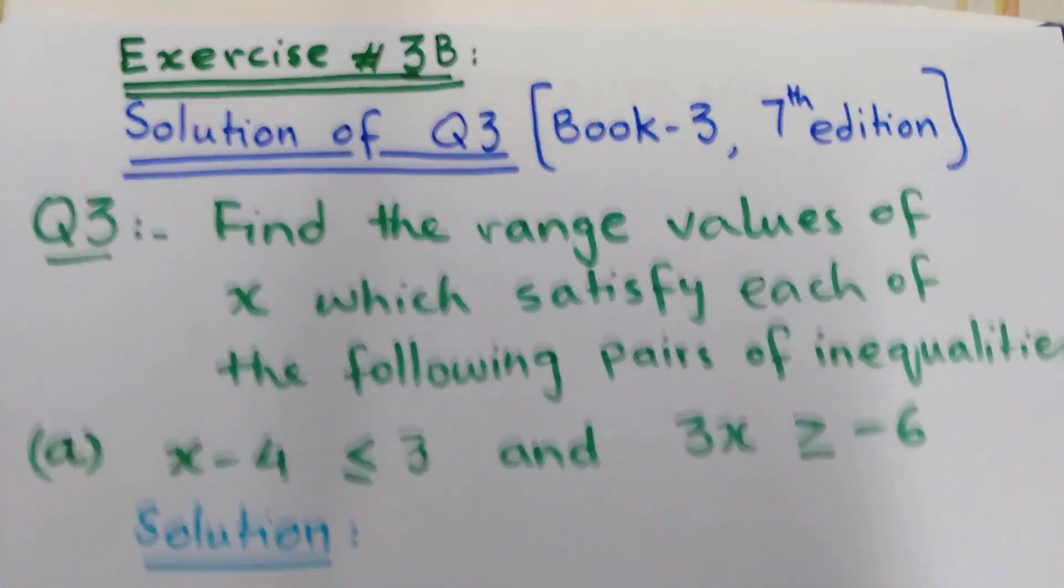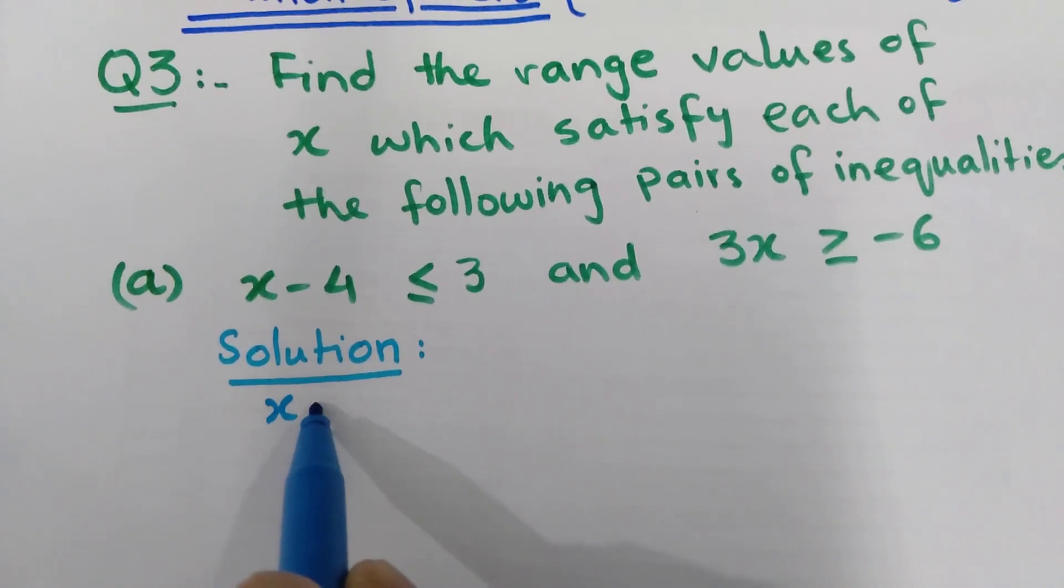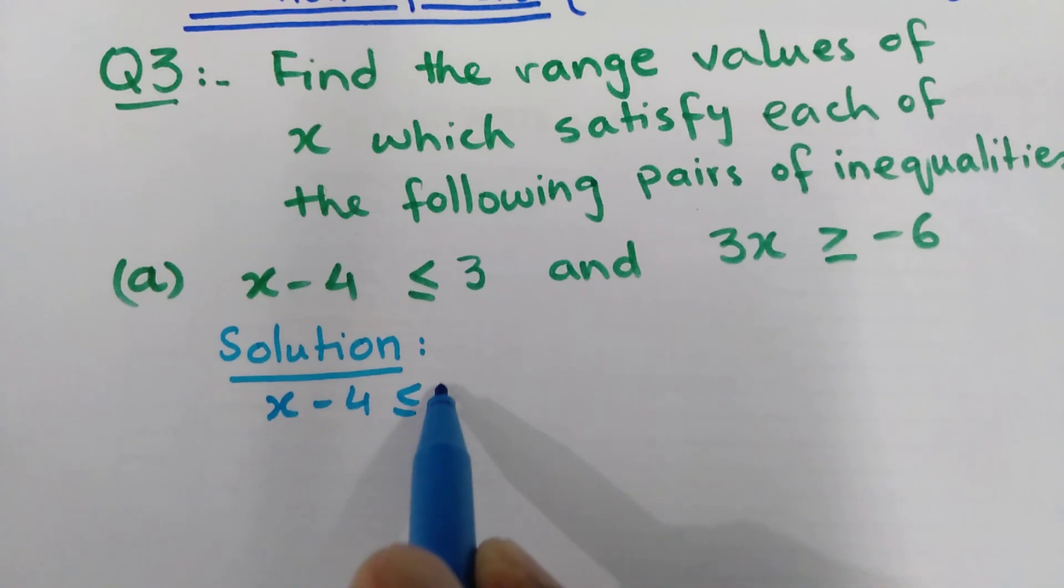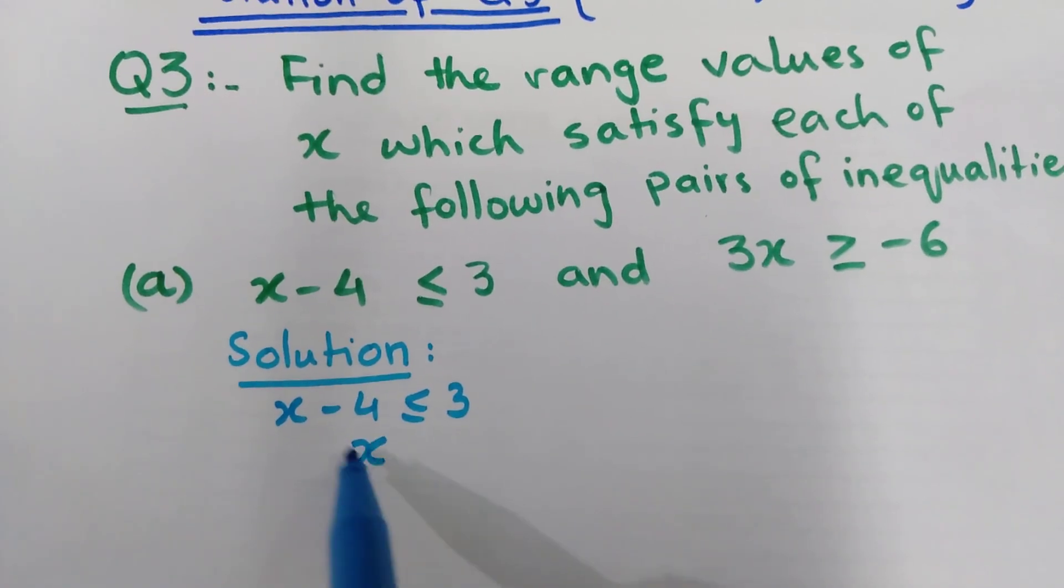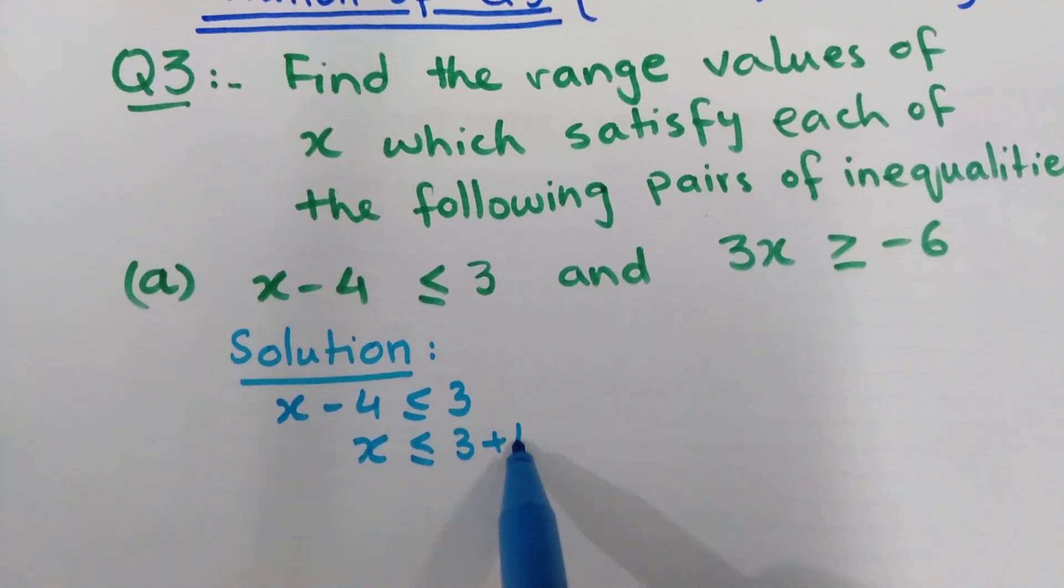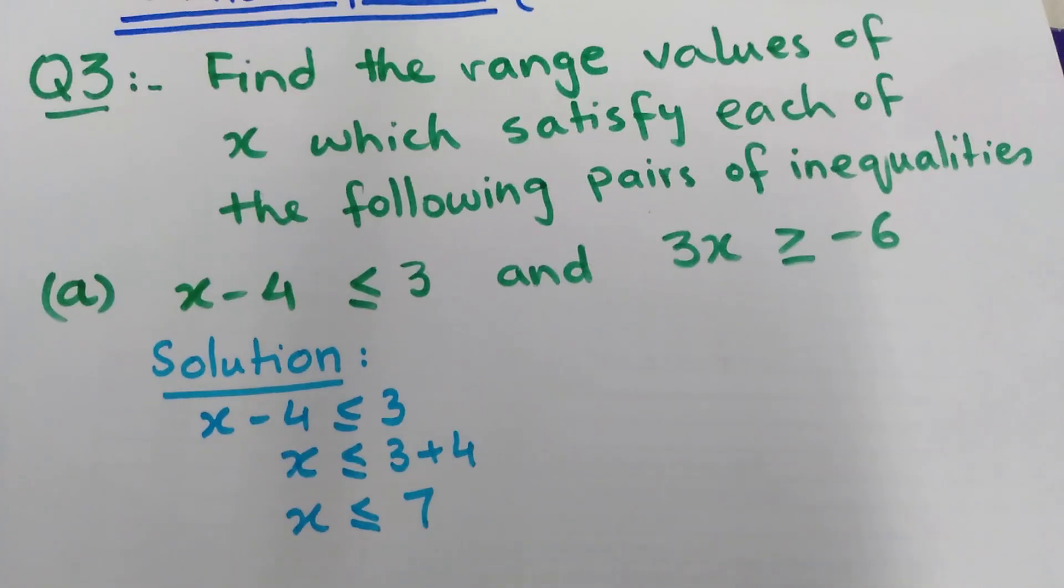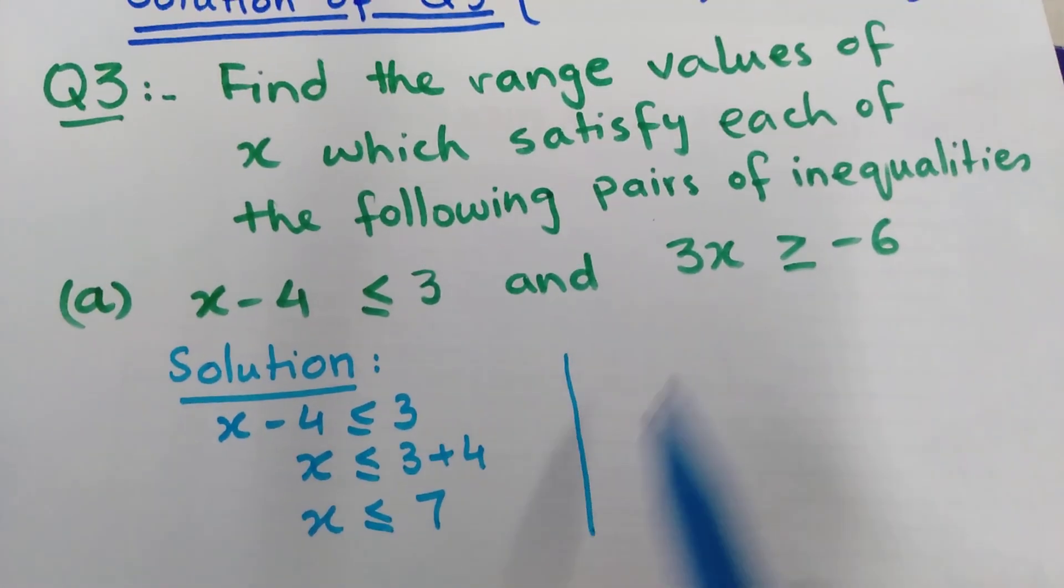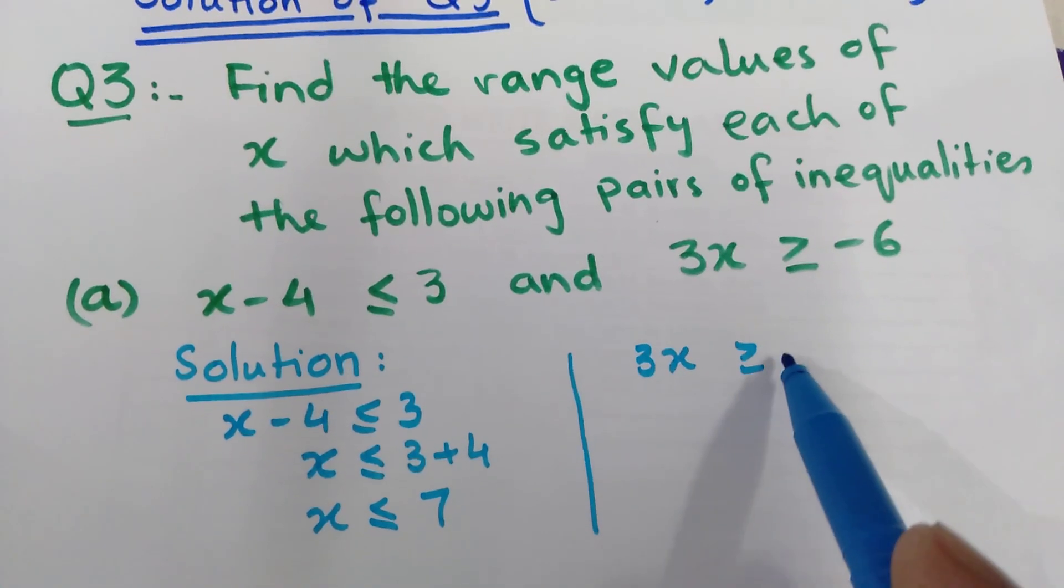What will you do? Take the first pair: x minus 4 less than or equal to 3. To make x the subject, shift minus 4 to the other side. x is less than or equal to 7.